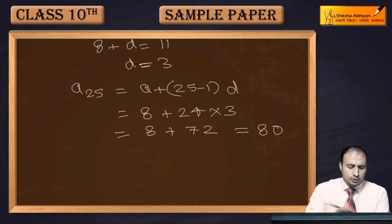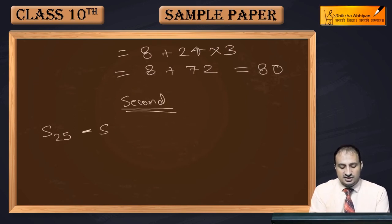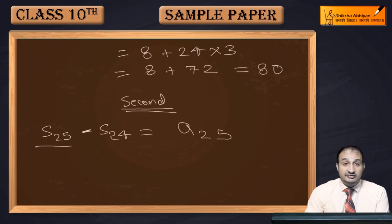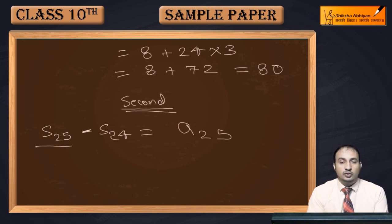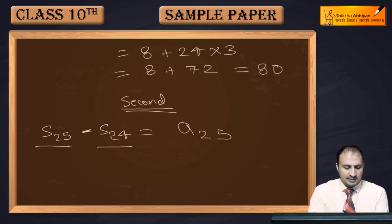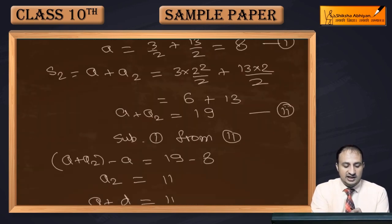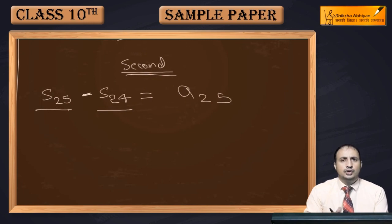We can also use a second method. If we find the sum up to 25 terms (S25) and subtract the sum up to 24 terms (S24), what remains is just the 25th term. We substitute n = 25 and n = 24 into the Sn formula and take the difference. This also gives the 25th term as 80.